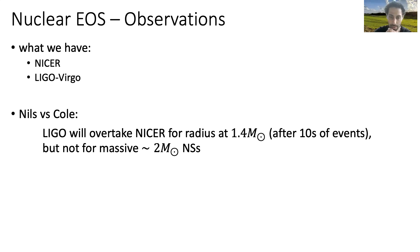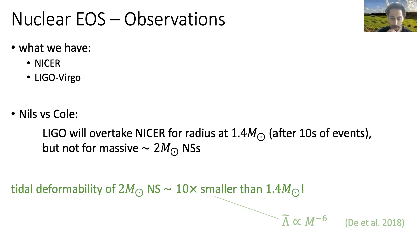The reason is because the tidal deformability of a 2 solar mass neutron star is about 10 times smaller than that of a 1.4 solar mass neutron star — the tidal deformability just scales so strongly with mass. We're already having a very hard time measuring tidal deformability of canonical 1.4 solar mass neutron stars. It's certainly hopeless that we'll ever measure tidal deformability of a 2 solar mass neutron star.